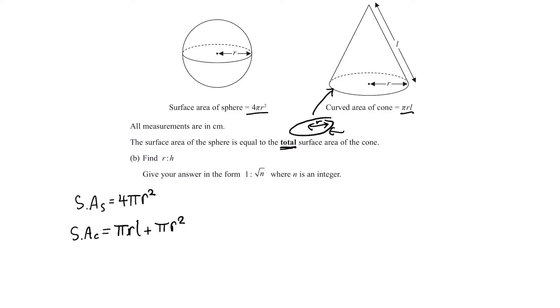Similar to last time, we set these two equal because we're told they're equal. So we have 4 pi R squared equals pi R L plus pi R squared. We can take away pi R squared from both sides, giving us 3 pi R squared equals pi R L. Divide both sides by pi, we get 3R squared equals RL. Divide both sides by R, we get 3R equals L.